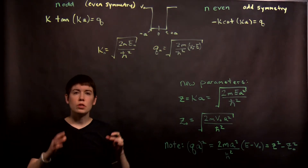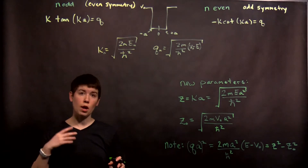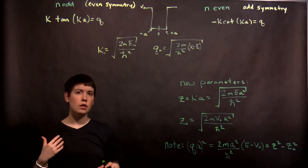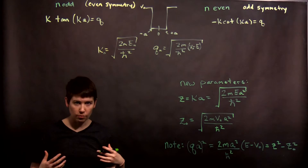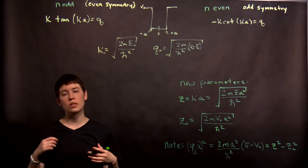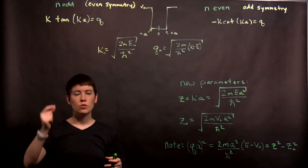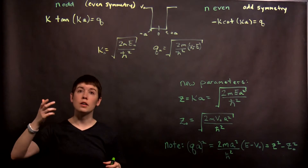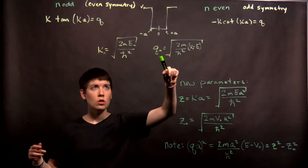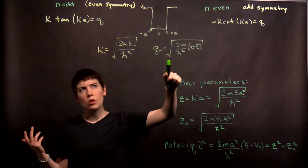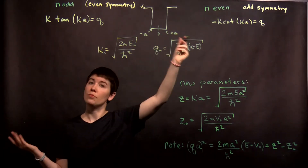This is a case where I think it's really valuable that you always remember what these parameters mean. By switching notation, this is actually helpful so that you don't get used to just thinking L, L, L. You think: what is my width of the well? Now it's 2A. So remember before I had negative L over 2, positive L over 2 — now that maps to A.